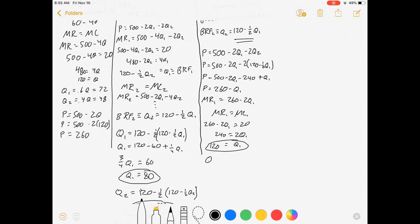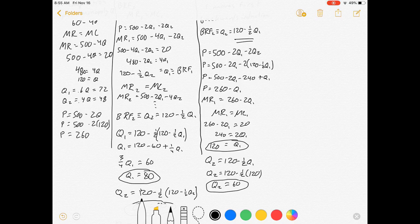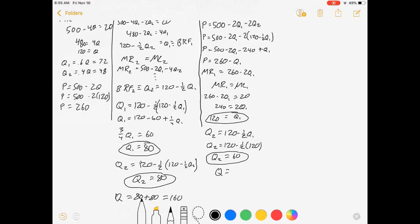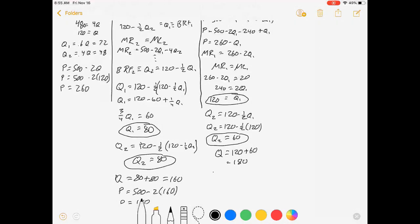What's firm two's quantity? We got our best response function for firm two: 120 minus one half Q1. So Q2 equals 120 minus one half of 120, so Q2 is going to be 60. The first mover has a big advantage: they're getting two thirds of the market. The market Q is 120 plus 60, which is 180. That means our price is 500 minus 2 times 180, which is 500 minus 360, so price is 140.